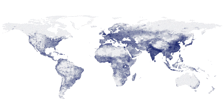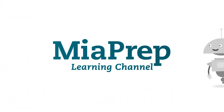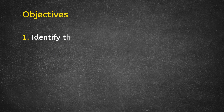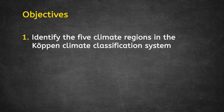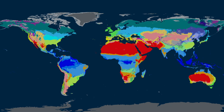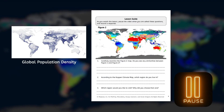Join me as we visit some diverse biomes around the world. Today's objectives are to identify the five climate regions in the Köppen Climate Classification System, to discuss their features, and to review the geological factors that cause them to exist. And that brings us to a new map, the Köppen Climate Map. If you still have the population density map fresh in your mind, compare the maps briefly. Pause the video and note some similarities in the two maps on your lesson guide on page 3.